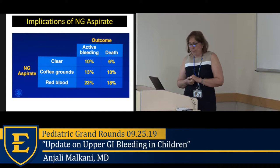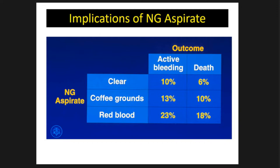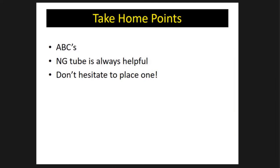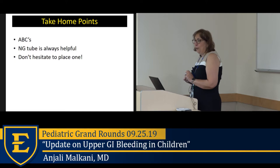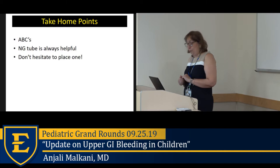An old AGA slide worth noting: even if the NG aspirate is clear, 10% of those patients could have active upper GI bleeding. And if there's red blood in the NG tube, the cause-of-death rate was 18%. Take-home points: airway, breathing, circulation — and don't hesitate to place an NG tube in a child with GI bleeding.